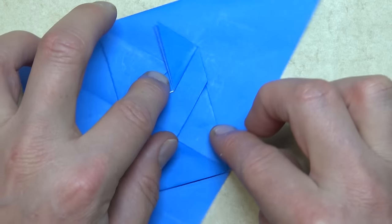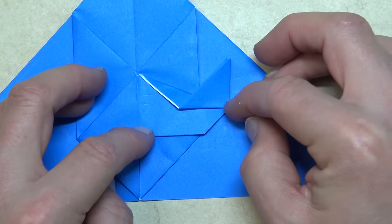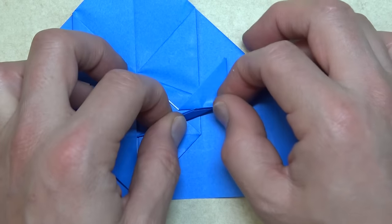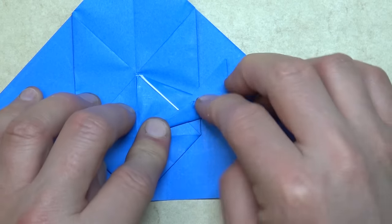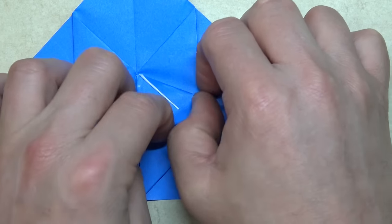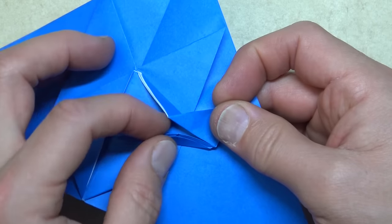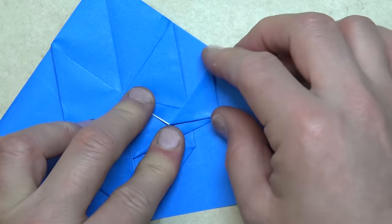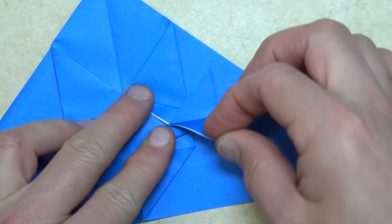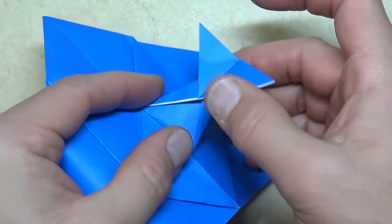Rotate. And fold these two flaps between this point and this point. And slip them underneath this flap. Like that. Unfold this flap. And the tail is complete.